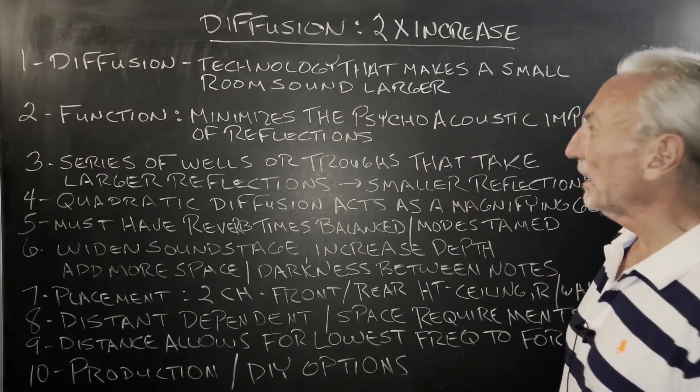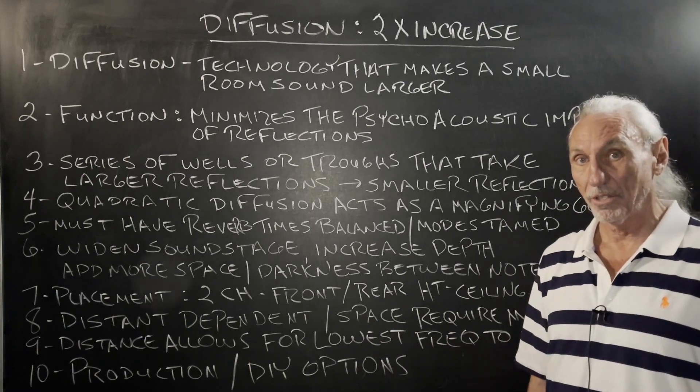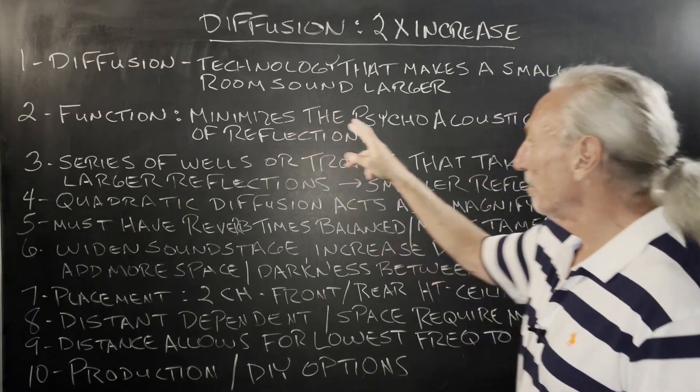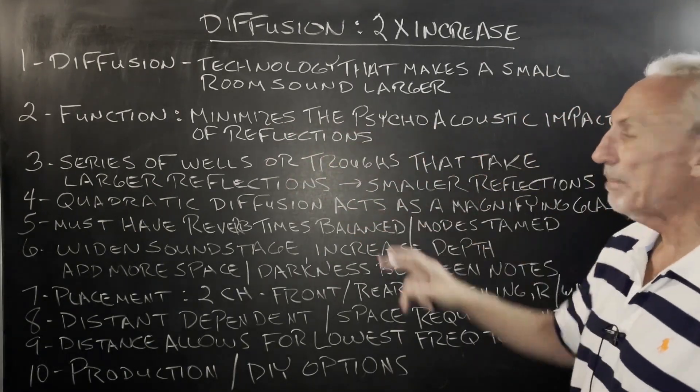So diffusion is a technology that makes a small room sound larger. Now how does it do that? That's the key, okay? So its function is to minimize the psychoacoustic impact of reflections.